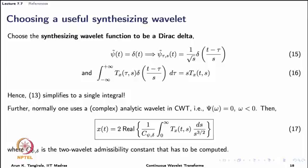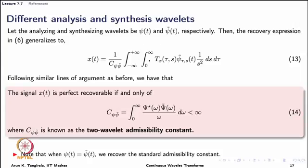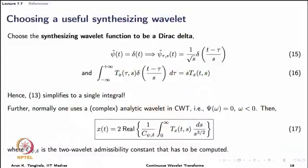Now let us derive the expression practically used for implementing the inverse CWT. The challenge is that implementing a double integral is the biggest hurdle, and we would like to reduce it to a single integral. The trick is to use ψ̃ as a Dirac delta function — strictly speaking, a distribution. With the synthesizing wavelet chosen as a Dirac, the inner integral with respect to dτ reduces to a single point.